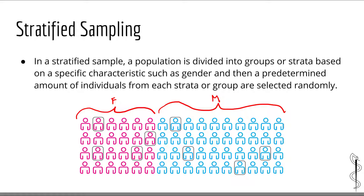You could do this for more than two characteristics. All you would need to do is create a strata or group for every characteristic of interest. For example, you could create a strata for every race and ethnicity that you wanted to include in your study.